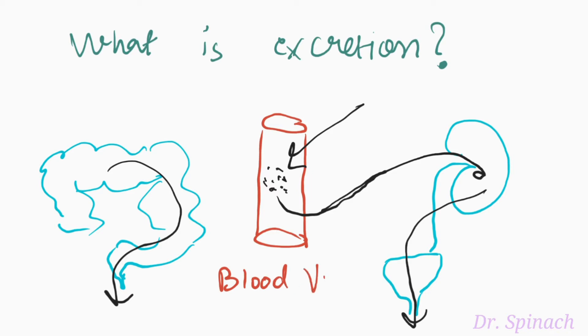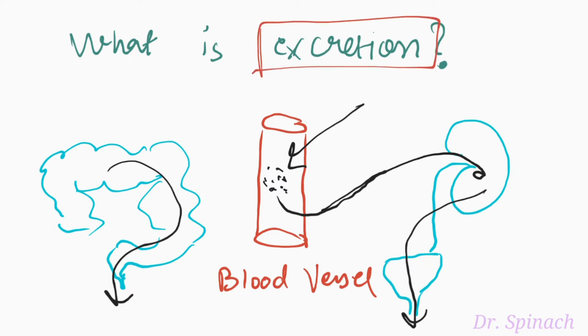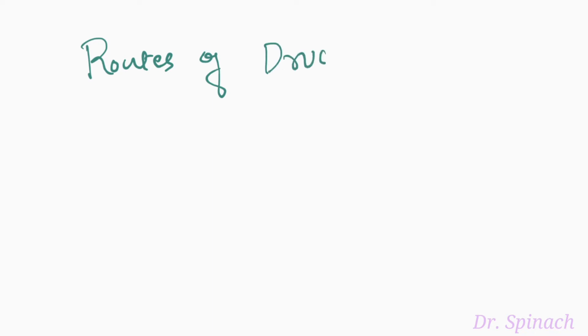That means a drug is said to be excreted when it is first absorbed in the blood and then eliminates out through various different routes from the body. What are the various routes of drug elimination?